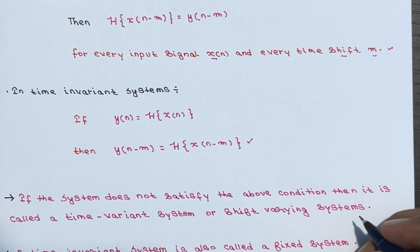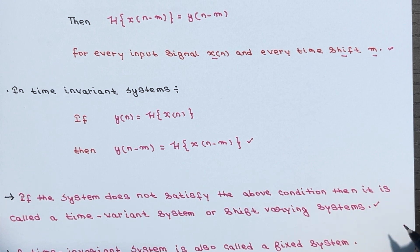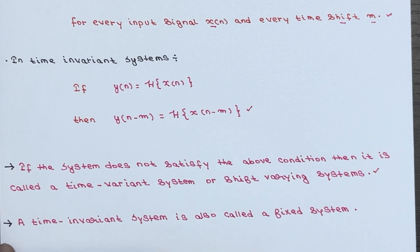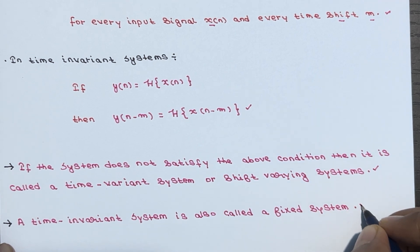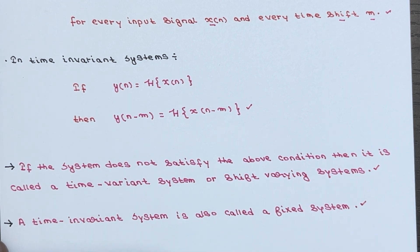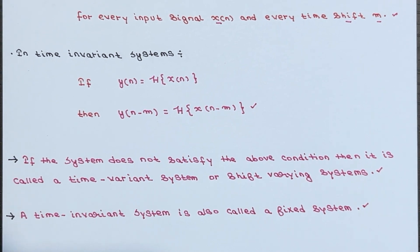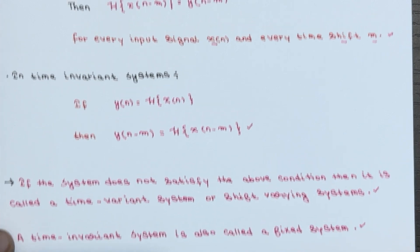If the system does not satisfy the above conditions, it is called a time variant or time varying system. The time invariant system is also called a fixed system. In summary, a time invariant system maintains consistent behavior even when there is a change of time. When we solve numerical examples, this will become clearer.